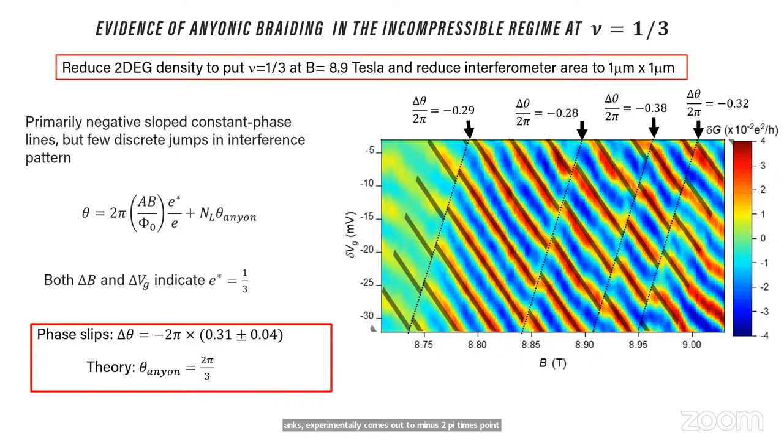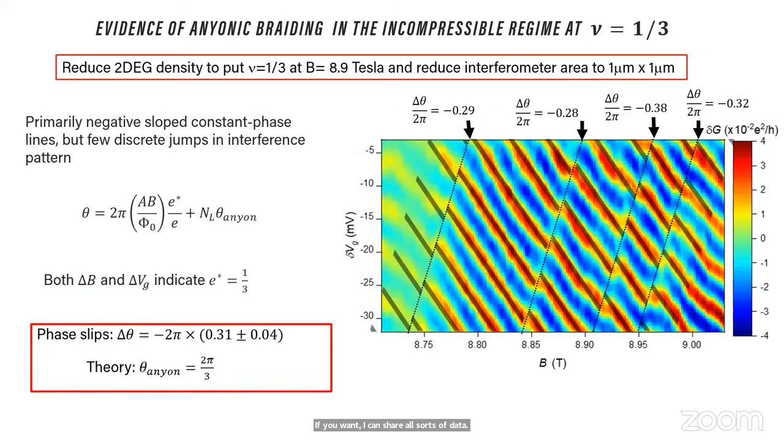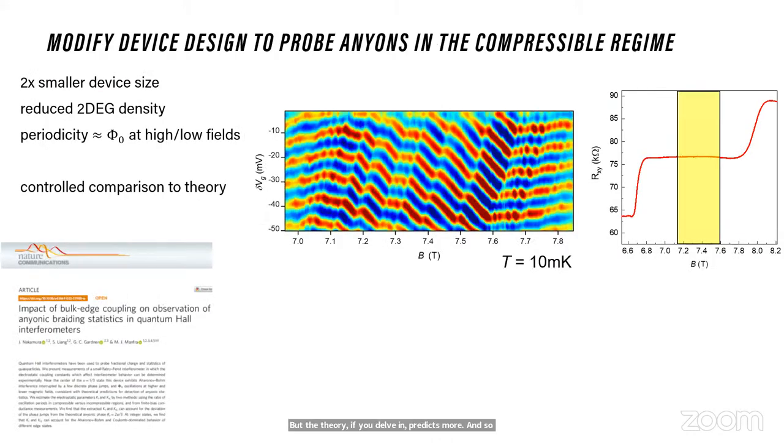And basically what they said is you have no chance. You explored only a small range of magnetic field. It was energetically favorable to keep the filling factor fixed and the probability was very low for producing quasiparticles. So of course we ran back to the lab, threw different samples, changed things. After learning this, what we did is we reduced the 2DEG density to put one third at lower magnetic field. That gives us more operating range. And we reduced the area a bit even more to actually make the charging energy a little bit worse. We went back the other way.